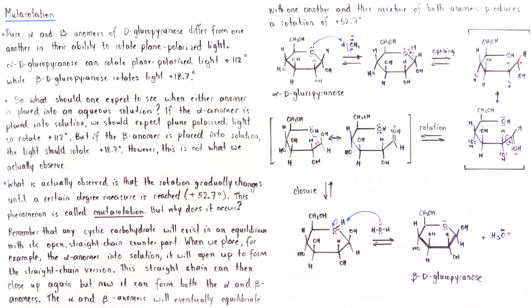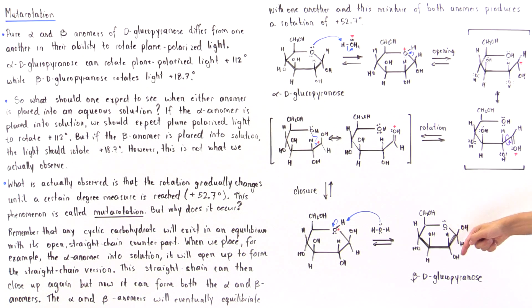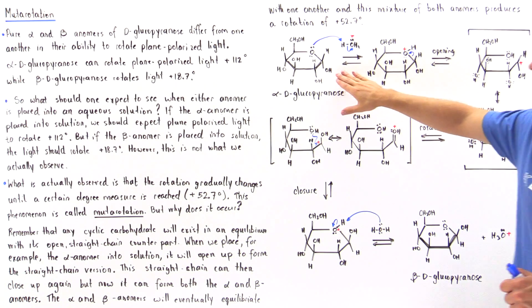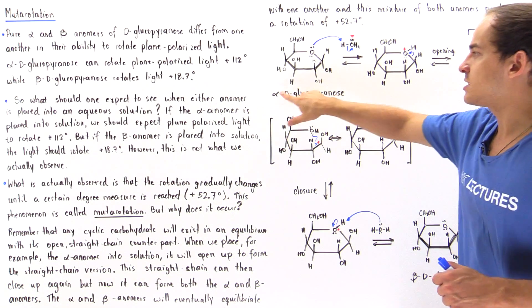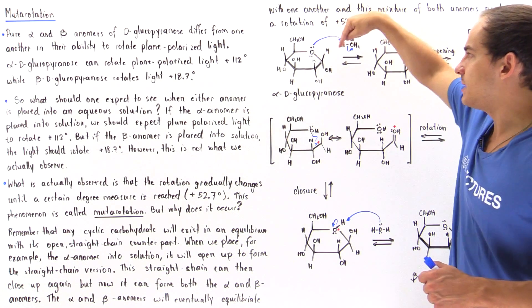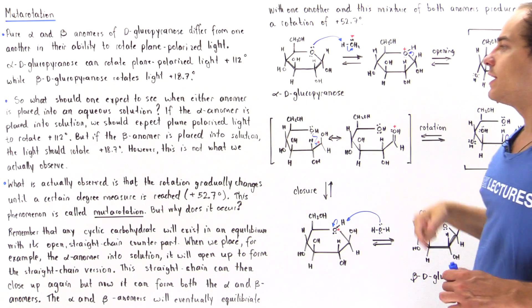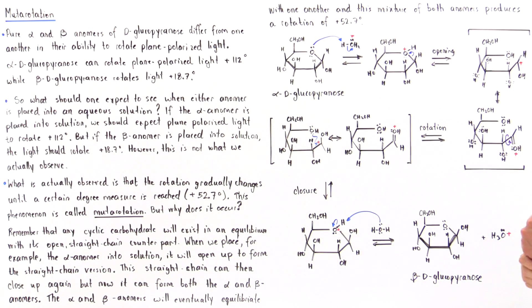Notice that in the alpha anomer, the hydroxyl pointed downward, whereas in the beta anomer it points upward.